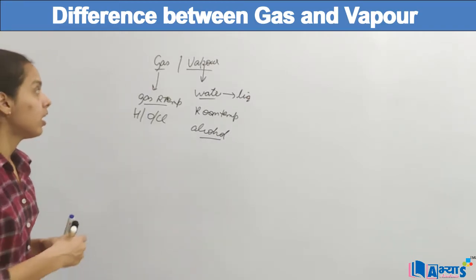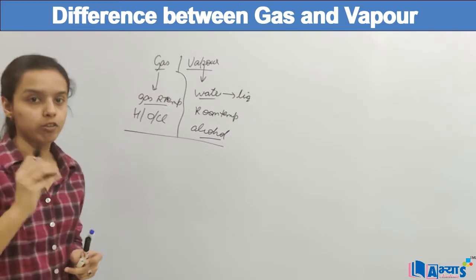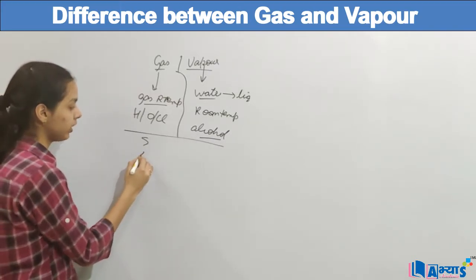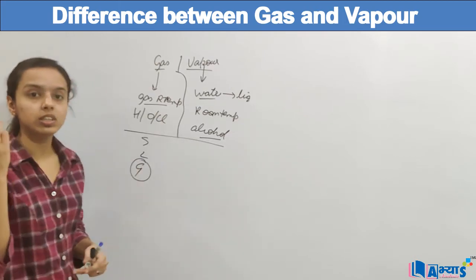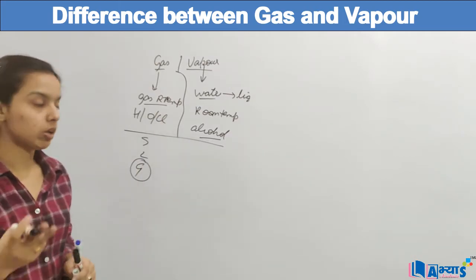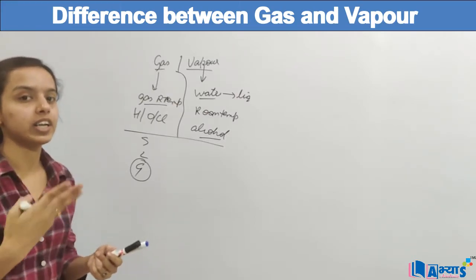One more difference is also there. In the gaseous state, we always say that gas is actually a state of matter like solid, liquid, and gas. So we say that gas is basically one of the three main properties or characteristics of matter: solid, liquid, and gas.